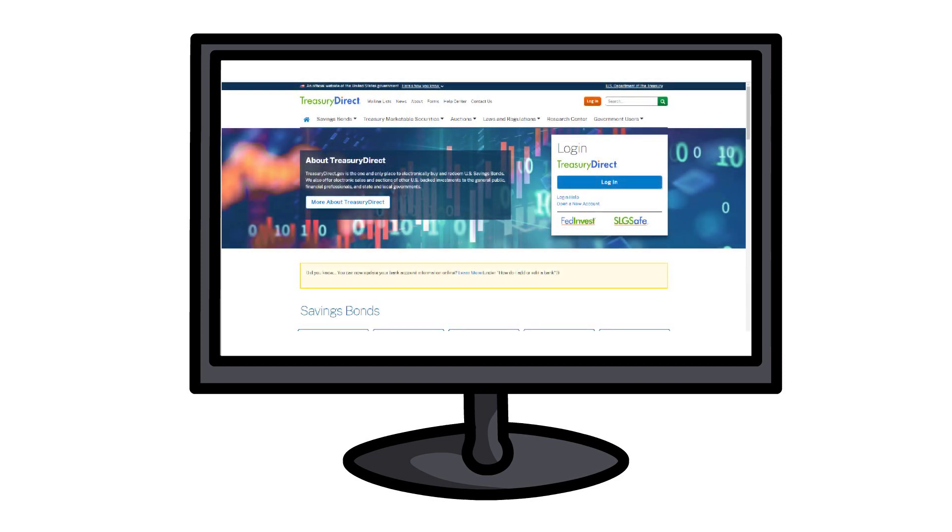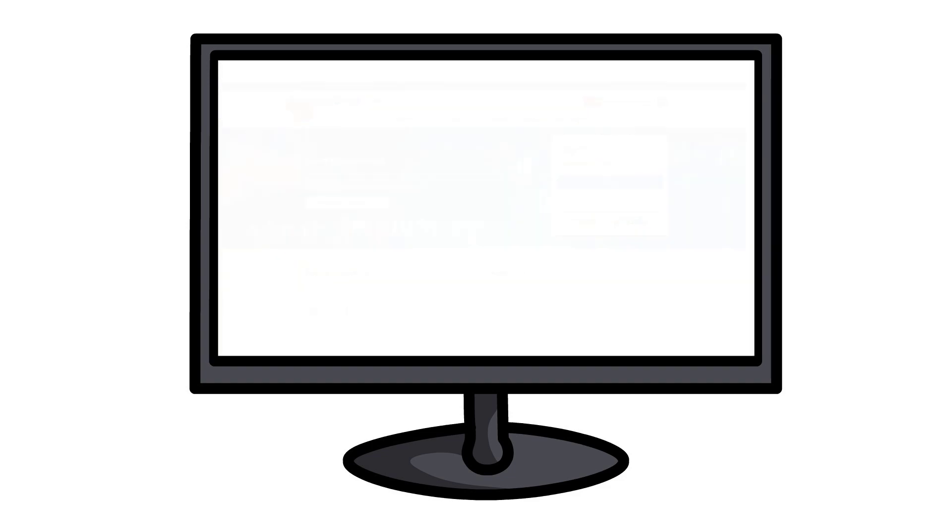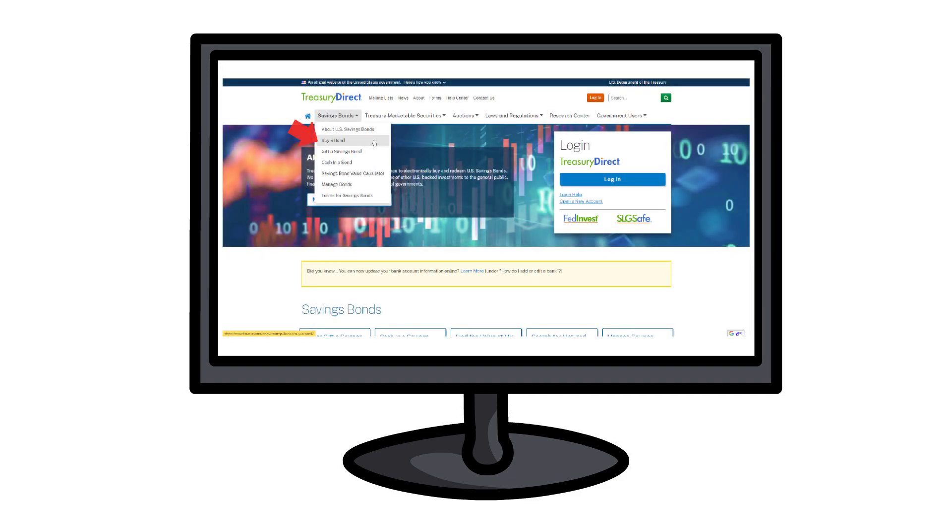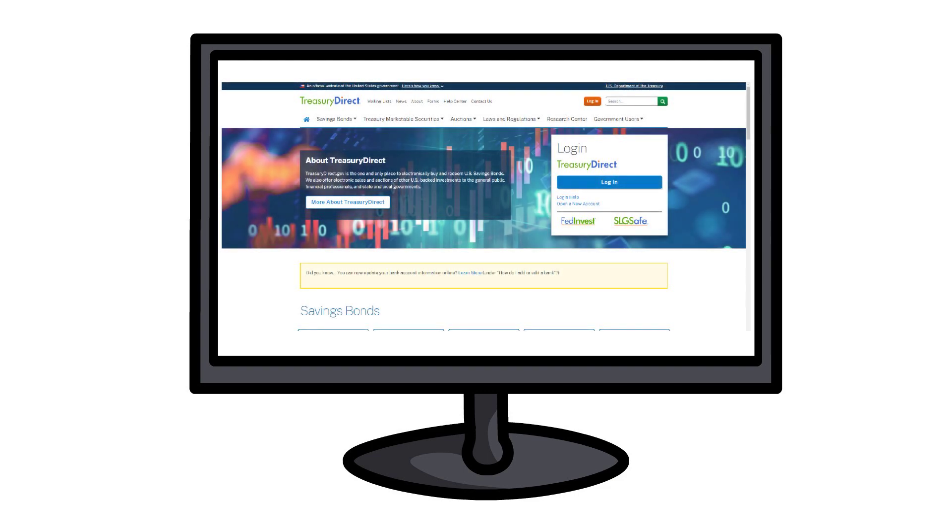So, let's buy I Bonds. Return to the home page and click Savings Bonds from the menu. And click Buy a Bond. Select Series I Savings Bonds, enter the amount and schedule, and then click Submit. It's done.